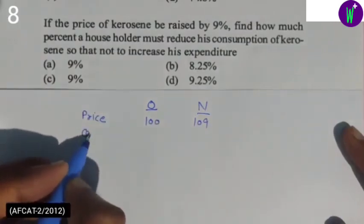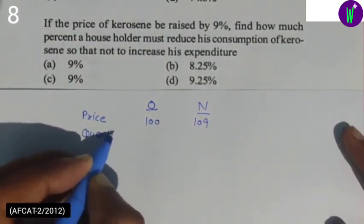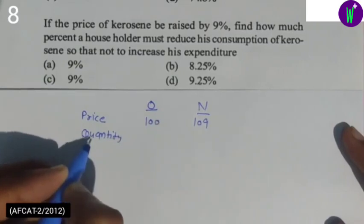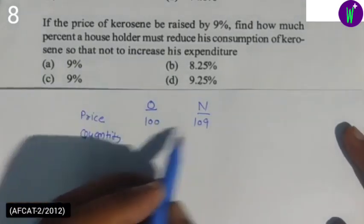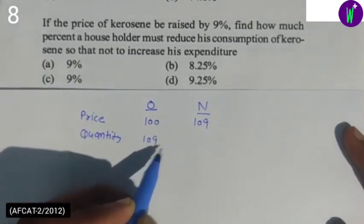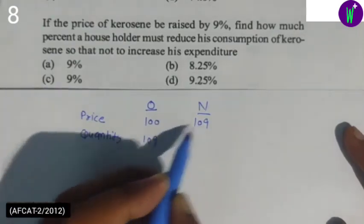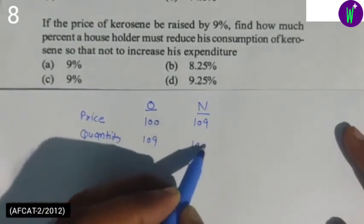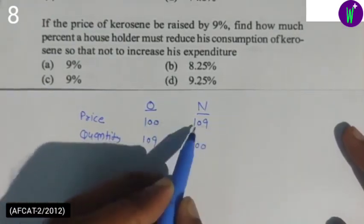Now, let's talk about quantity. The quantity and price are inversely related, so if price increases, quantity must decrease proportionally for the expenditure to remain the same.